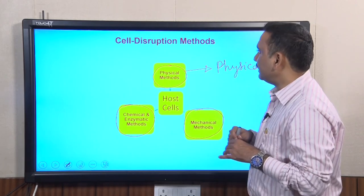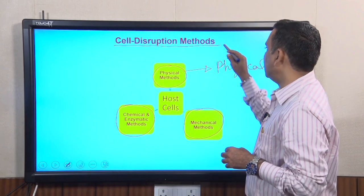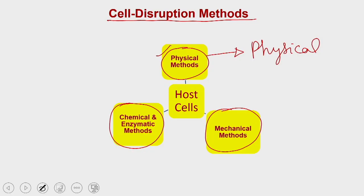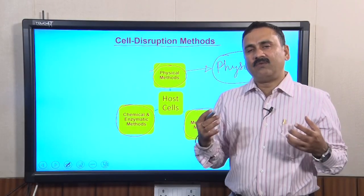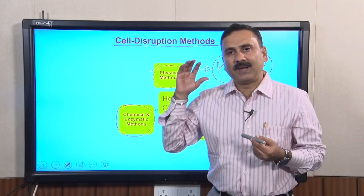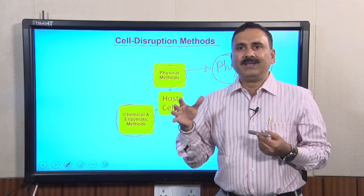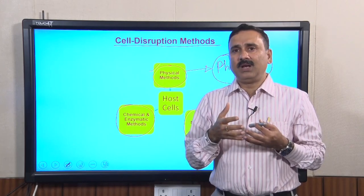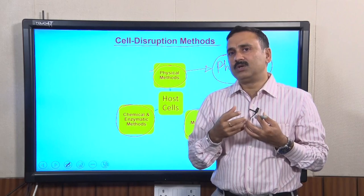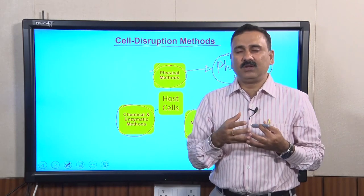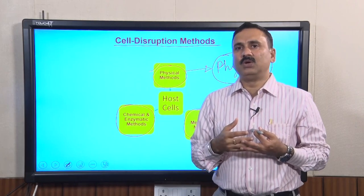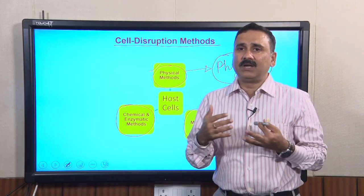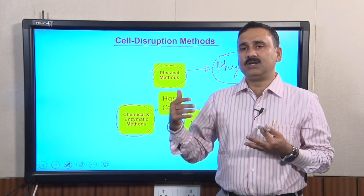Let us start our discussion with physical methods. Physical methods exploit different physical properties to disrupt cells. When you apply a physical force, it gives stress to the cell, and in response the cell will either shrink or expand. In both of these events, the cell eventually bursts and releases the cellular content into the supernatant.